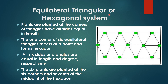Next one is the Equilateral Triangular or Hexagonal system. In this system, plants are planted at the corners of triangles that have all sides equal in length. In this hexagonal system, triangles are formed, but all three sides of each triangle remain equal in size. One corner of six equilateral triangles meets at a point and forms a hexagon. You can count one, two, three, four, five, and six triangles, and the one point meeting at the center forms this hexagonal shape.